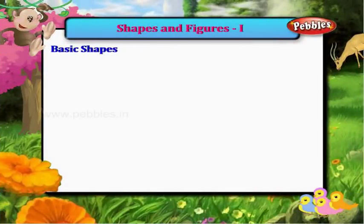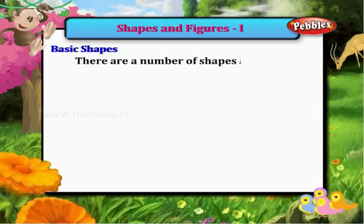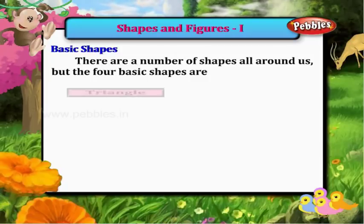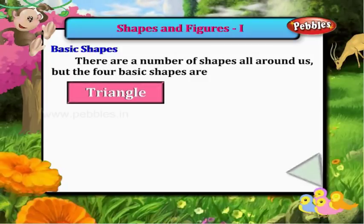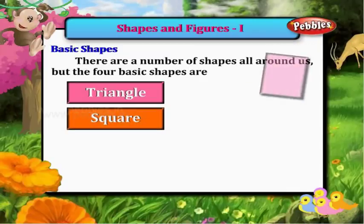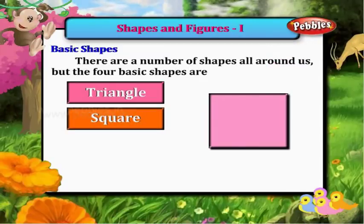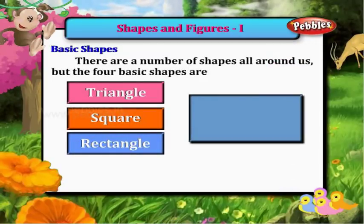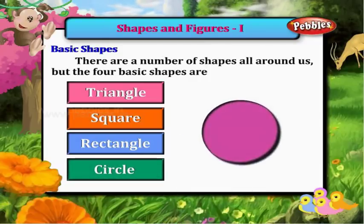Basic Shapes. There are a number of shapes all around us. But the four basic shapes are triangle, square, rectangle and circle.